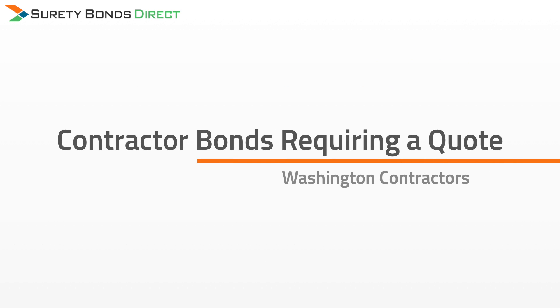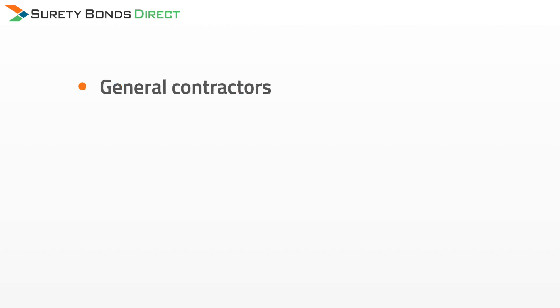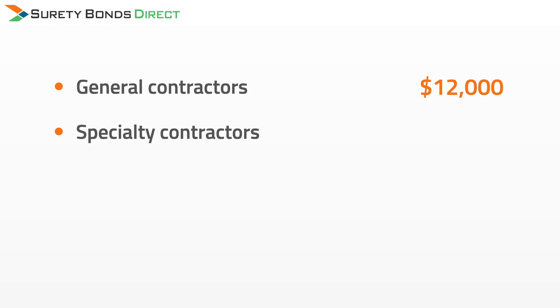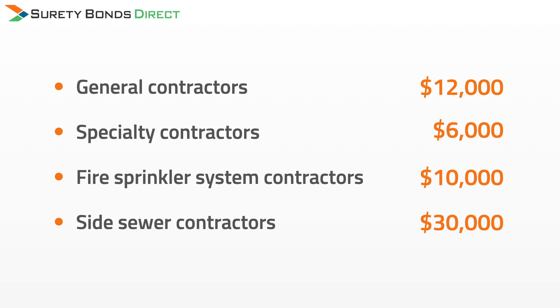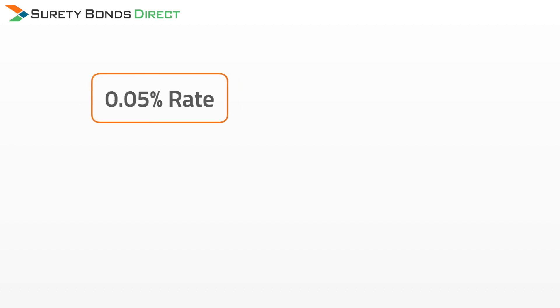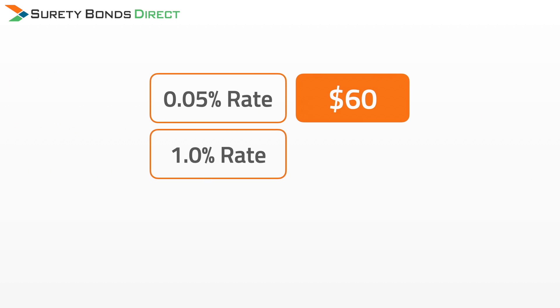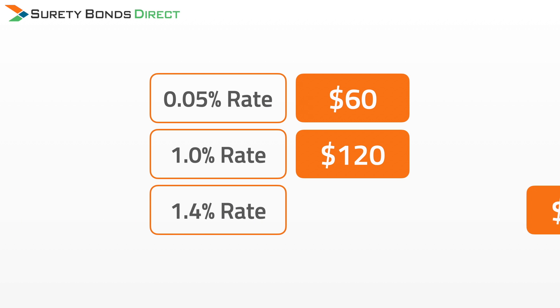The remaining license classifications require a surety to provide a custom quote based primarily on three things: personal credit, business and industry experience, and any prior bond claims. Here are the bond amounts for each license: general contractors require a $12,000 bond, specialty contractors require a $6,000 bond, fire sprinkler system contractors require a $10,000 bond, and side sewer contractors — both general and within Seattle city limits — require a $30,000 bond. Using the $12,000 general contractor bond as an example: a 0.5% rate costs $60, a 1% rate costs $120, and a 1.4% rate costs $168.